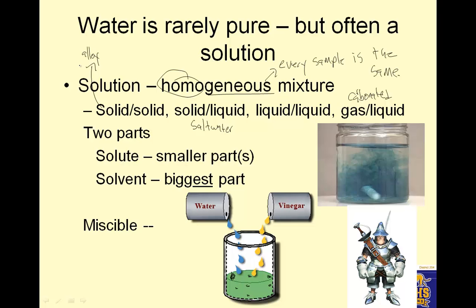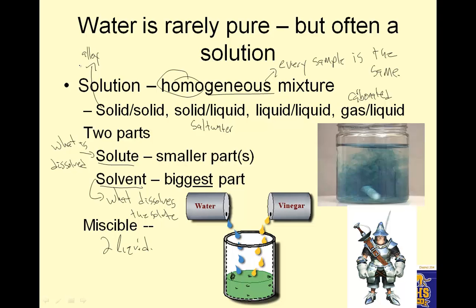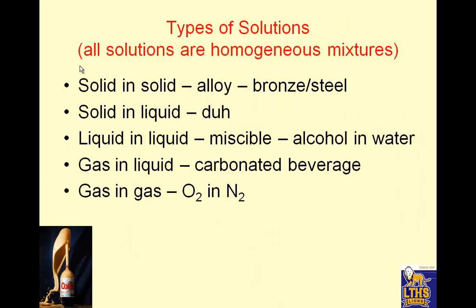There are two parts: there's the solute, which is the smaller part, and the solvent, which is the biggest part. The solvent is what dissolves, and the solute is what is dissolved. For example, if I have salt water, salt would be the solute — smaller part, it dissolves — and water is the solvent, water dissolves the solute. Miscible refers to two liquids. Two liquids are called miscible because it's hard to tell which one's the dissolver and which one's the dissolved, so if two liquids dissolve in each other, they are called miscible.